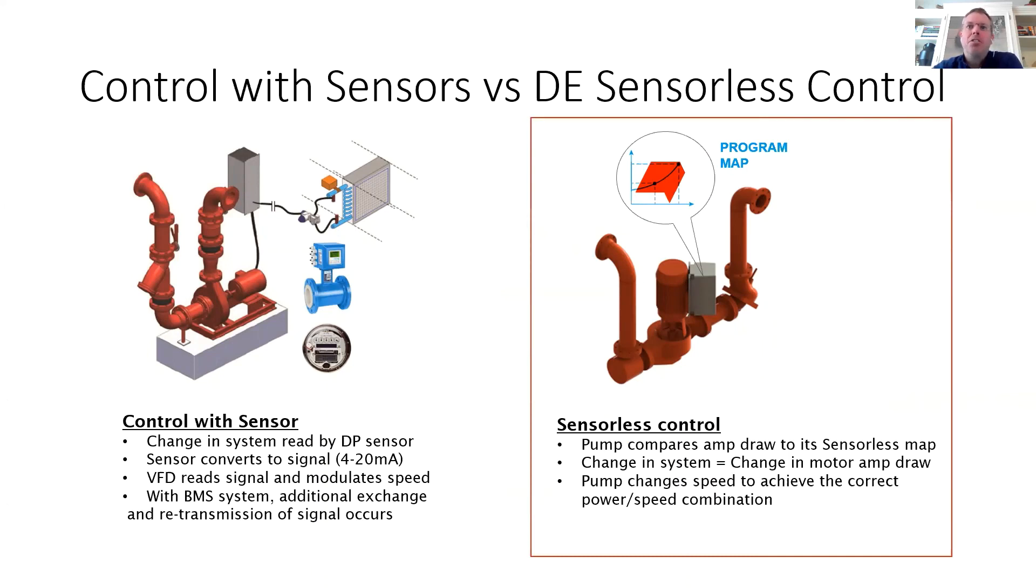In comparison, design envelope sensorless control monitors pump speed and motor amp draw, compares it to its sensorless map and control curves, and as changes occur out in the system, the pump speed changes to achieve the correct power and speed combination. So the BMS system, through one BACnet connection, can pull in power consumption, pump speed, pump flow, pump head, status, and alarms, which can eliminate as many as four separately installed devices and takes out the guesswork as to where to install a DP sensor.